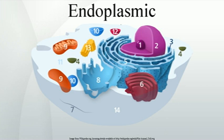The smooth endoplasmic reticulum, abbreviated SER, has functions in several metabolic processes. It synthesizes lipids, phospholipids, and steroids. Cells which secrete these products, such as those in the testis, ovaries, and skin oil glands, have a great deal of smooth endoplasmic reticulum. It also carries out the metabolism of carbohydrates, drug detoxification, attachment of receptors on cell membrane proteins, and steroid metabolism. In muscle cells, it regulates calcium ion concentration. It is connected to the nuclear envelope.